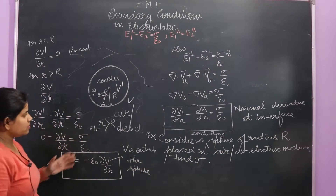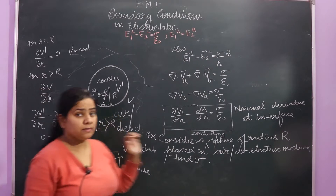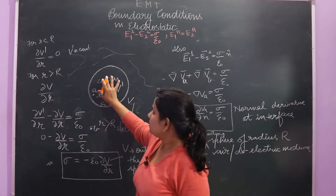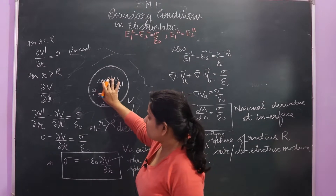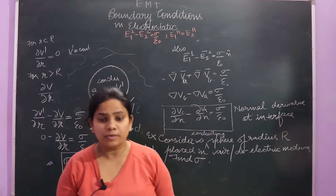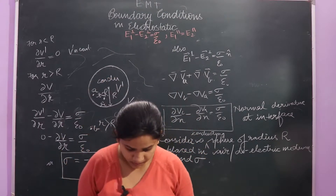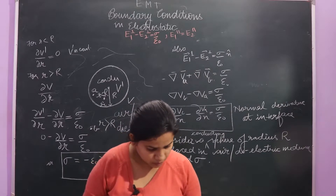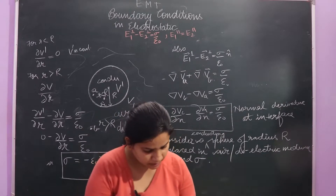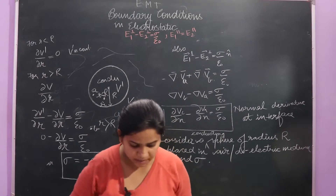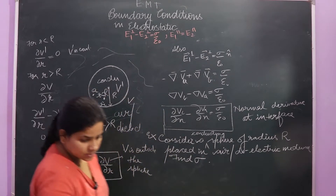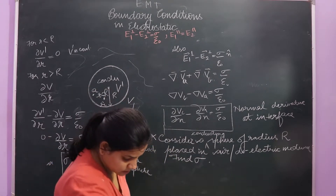This potential V is outside the sphere. If V is constant, then its derivative will be zero. Now let's do some more questions based on this topic — we will discuss this formula.